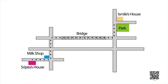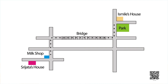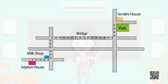Now we will think of the way from Smile's house to Srijata's house — the reverse route. Starting from Smile's house, go straight, cross the park, turn right from the first square, cross the bridge, then turn left from the square, move straight to reach the milk shop, and then turning right from that square you will reach Srijata's house.